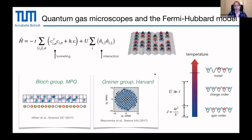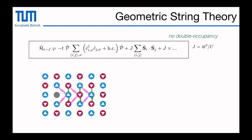Half filling is fairly well understood, but the question is what happens once you put holes into the system — once you go away from half filling along the doping axis. Doping means you have empty sites — holes — in your system. Because typically the interaction U is much bigger than T, we can apply a Schrieffer-Wolf transformation and map this to the TJ model, where we don't have double occupancies. Instead we have this Heisenberg term S·S, which tells you that neighboring spins want to be anti-aligned, plus hole hopping with T, where J equals 4T² over U.